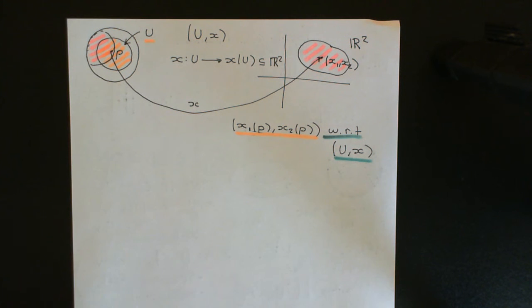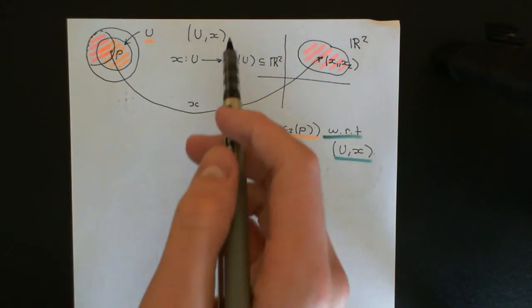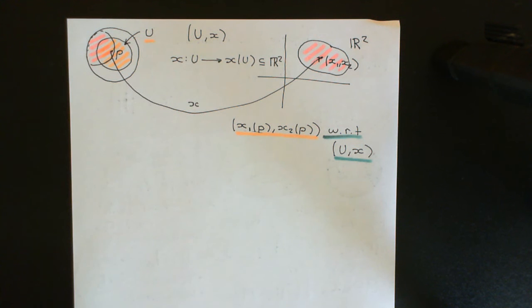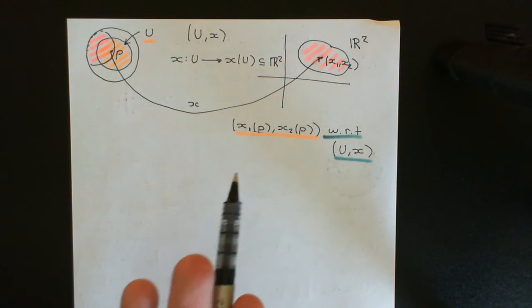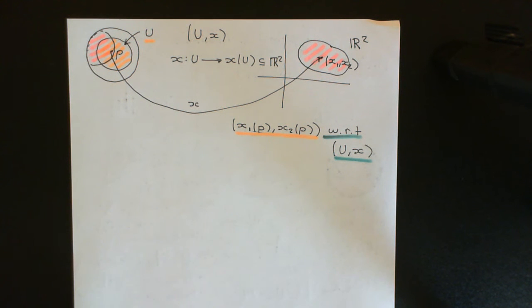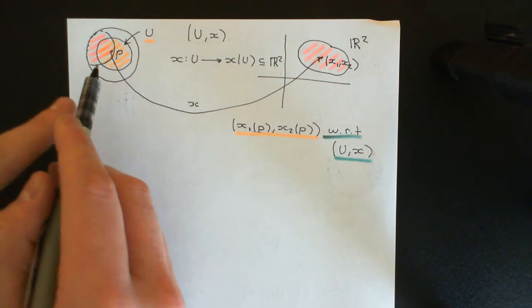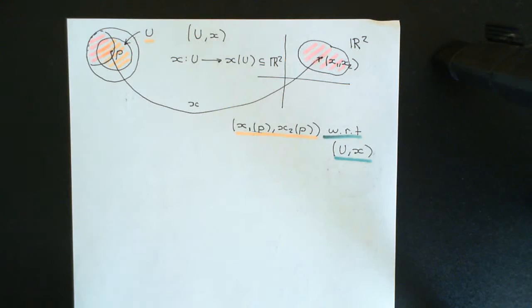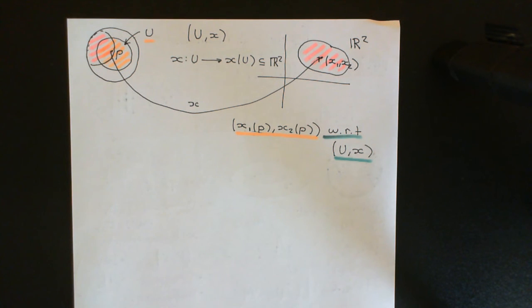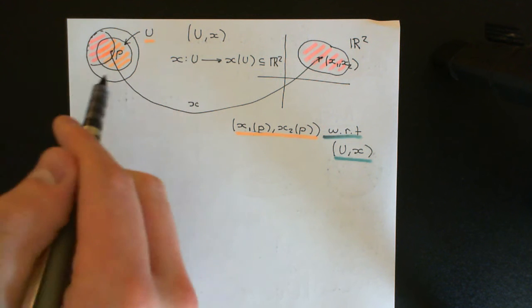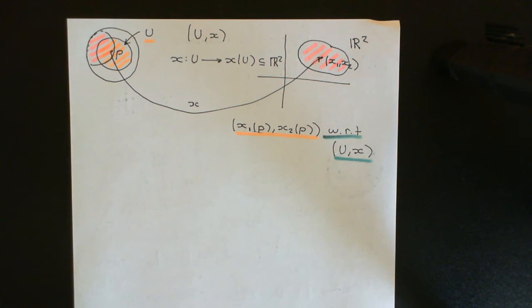So coordinates are completely with respect to a chart. They're just a way of associating the points of the topological manifold with points in R^2 according to that atlas. Having said that about how meaningless they are, they still have incredible power, because R^2 has a very natural algebraic structure — the vector space structure over the field of real numbers. That means we can potentially start to do algebra for our topological manifold by mapping all the points onto coordinates in R^2. That's the real power of coordinates: it allows us to explore the structure of the manifold with algebra.